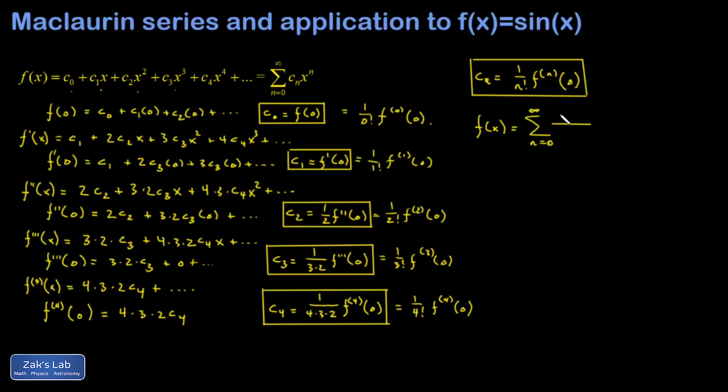That's the sum as n goes from 0 to infinity, nth derivative of the function evaluated at 0 over n factorial multiplied by x to the n. So now we have a general method to just immediately express any well-behaved function as an infinite series centered at x equals 0.